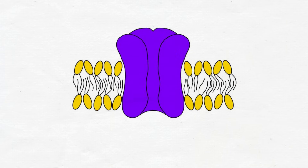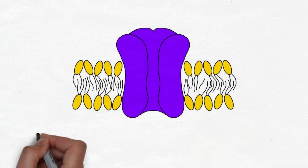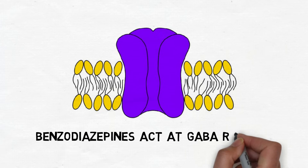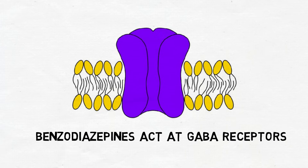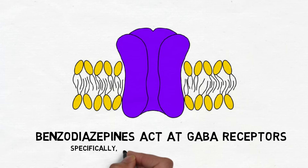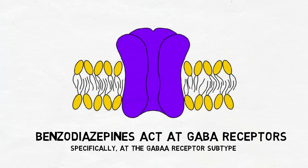The sedating and anxiety-reducing effects of benzodiazepines are believed to be attributable to the drug's actions at receptors for the neurotransmitter gamma-aminobutyric acid, or GABA. In particular, benzodiazepines act at a subtype of GABA receptors called the GABA-A receptor. GABA-A receptors that also bind benzodiazepines are sometimes called benzodiazepine receptors.